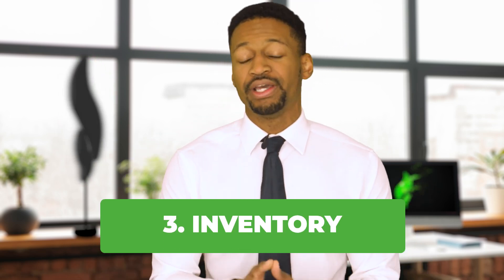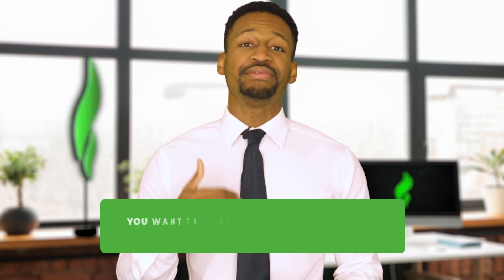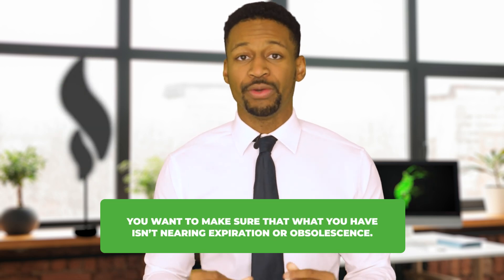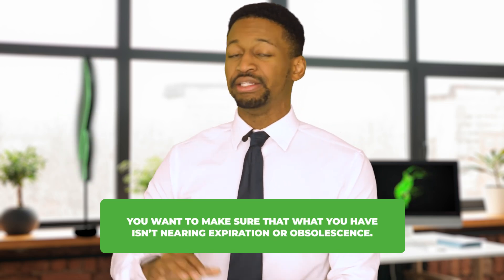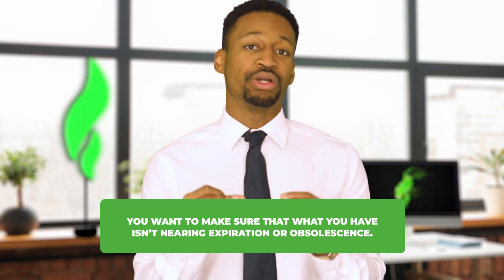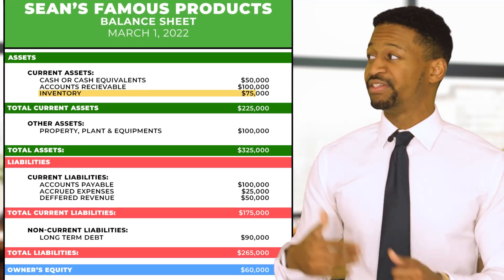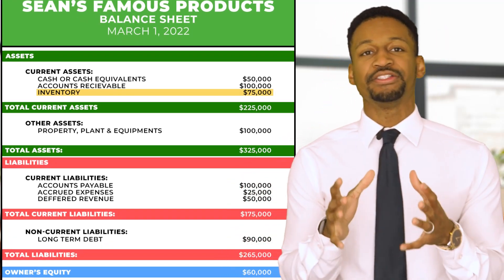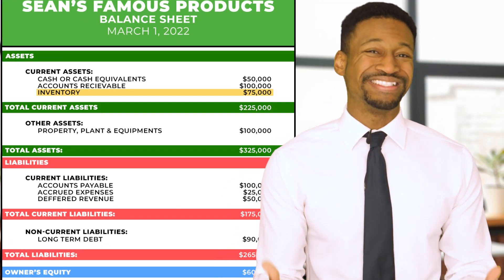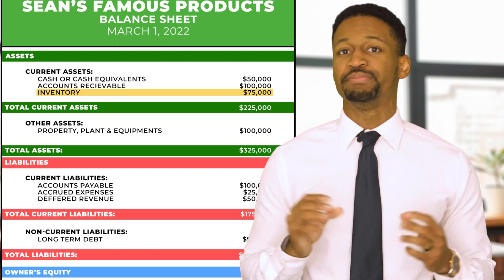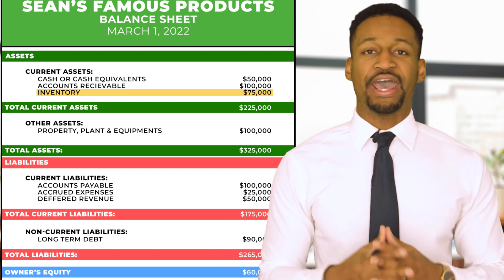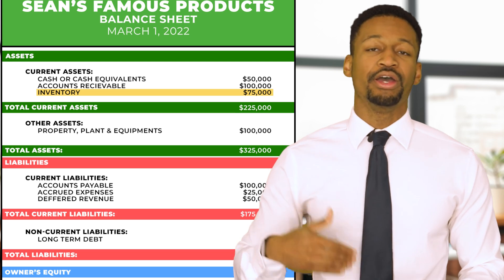Next, let's analyze number three: inventory. When it comes to inventory, you want to make sure what you have isn't nearing expiration or becoming obsolete. Even though we have an inventory balance of $75,000, that doesn't mean it will all sell and convert into cash — especially if you have products with a high turnover rate, like food products.